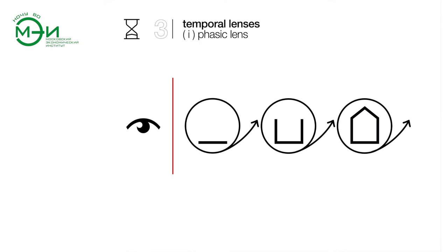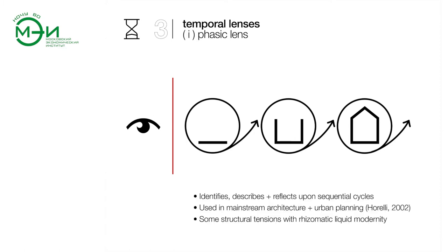The phasic lens, as used in mainstream architecture and urban planning, is focused on identifying, describing, and reflecting upon different cycles of participation or participatory activity over time. Certain techniques and methods are a better fit for earlier, middle, or later stages in a sequential design process. The phasic lens in research is very much subject to structures of institutional processes and planning, and can be considered most appropriate for industry-regulated development. Some structural tensions do exist between it and a live projects abroad context, the latter representing a decentralised, less regulated, and rhizomatic evolutionary discourse.